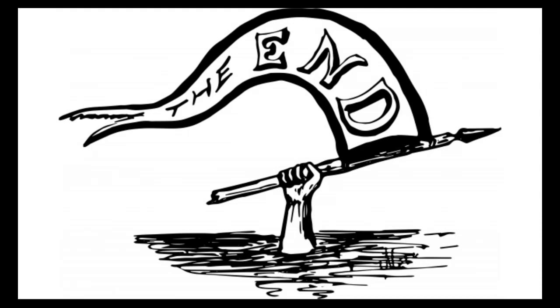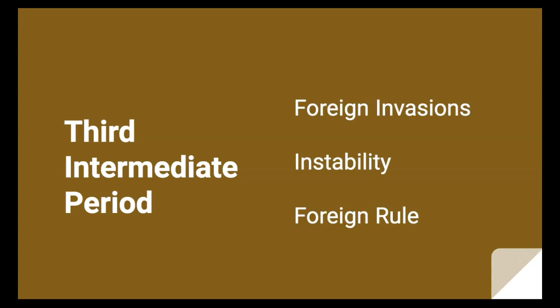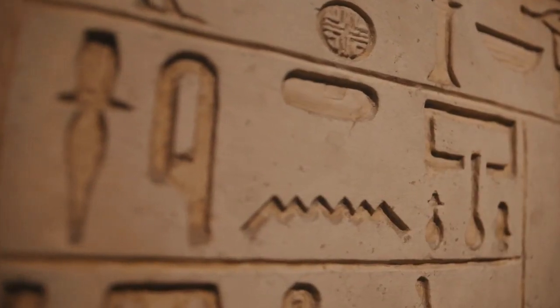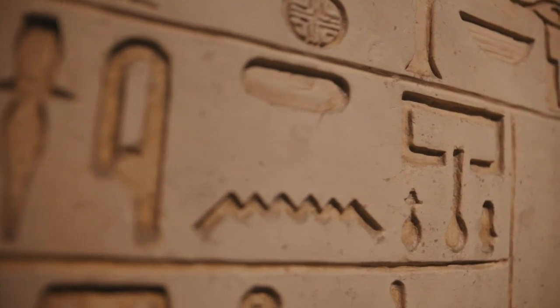These repeated attempts, instability, and constant warfare weakened the ancient Egyptian New Kingdom, eventually leading to the beginning of the Third Intermediate Period and the end of the New Kingdom around 1070 BCE. During this period, Egypt was ruled by one foreign leader after another, leading to Greek rule and then Roman rule over the following centuries. However, the remains the ancient Egyptians left behind show their great accomplishments, and their written records have helped us learn more about them.